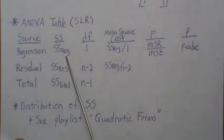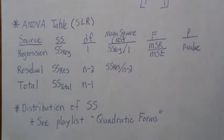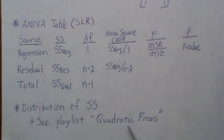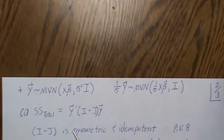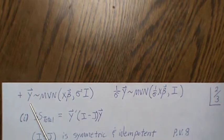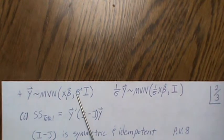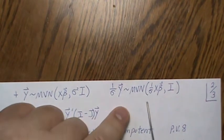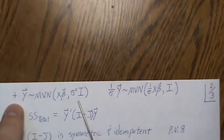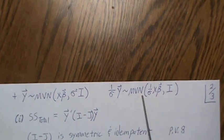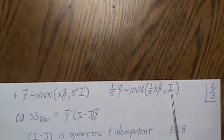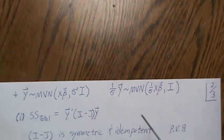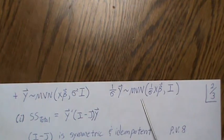Now let's look at the distributional properties of these sums of squares. I have a playlist called Quadratic Forms with five or six videos, and we're going to make use of all those theorems without re-deriving them here. As a reminder, y is multivariate normal with mean Xβ and variance-covariance matrix σ²I.